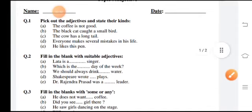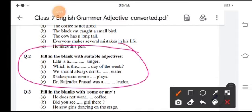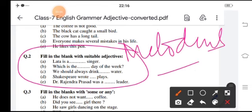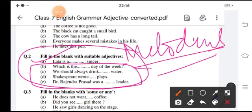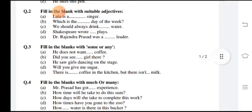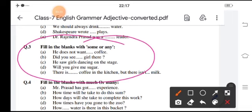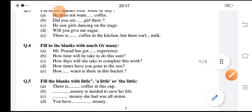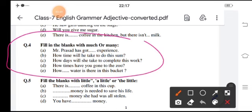Then fill in the blanks with suitable adjectives. You have to fill suitable adjectives like this. Then fill in the blanks with some or any - that is quantity. In the first, he does not want any coffee.